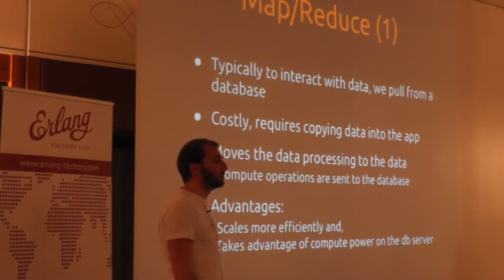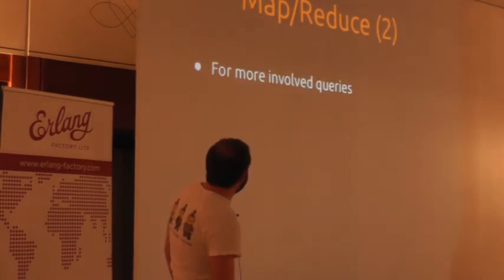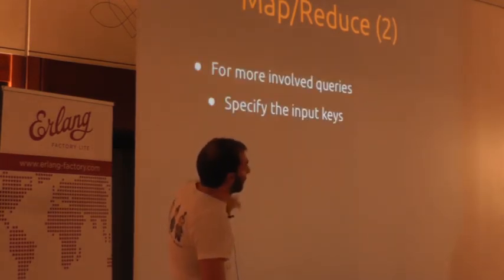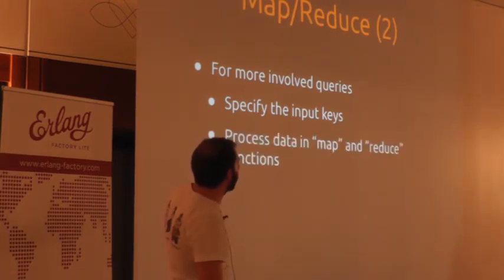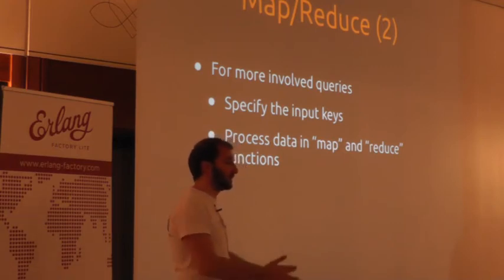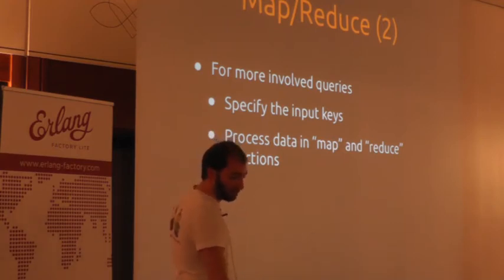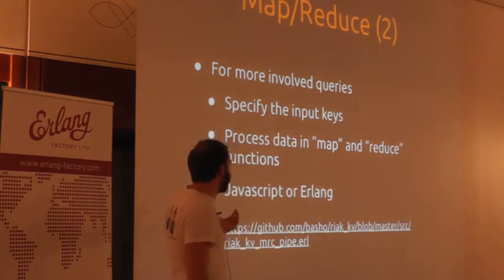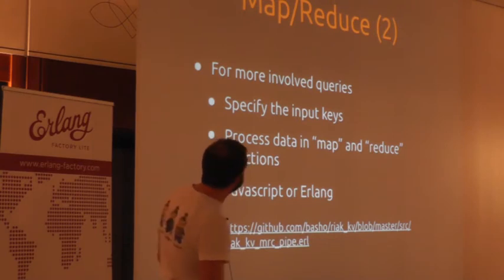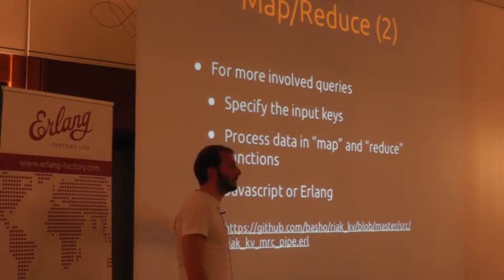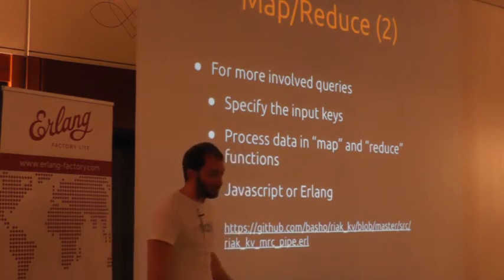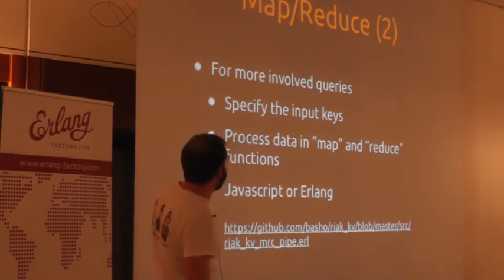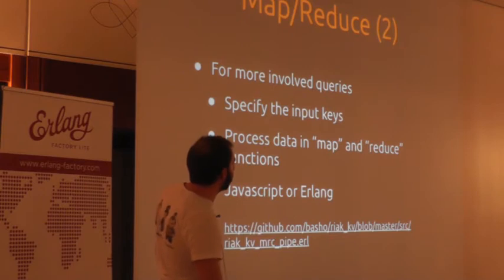It scales more efficiently and takes advantage of compute power on database servers at scale. For more involved queries, our specific implementation allows you to specify input keys and process data using Map and Reduce functions, which are fittings in React Pipe. You can do it in both JavaScript or Erlang. You can look at the MapReduce implementation — the pipe itself — in React KV. We want to replace KV entirely with this implementation rather than hooking them together, but at this stage it's still an embedded piece of KV.